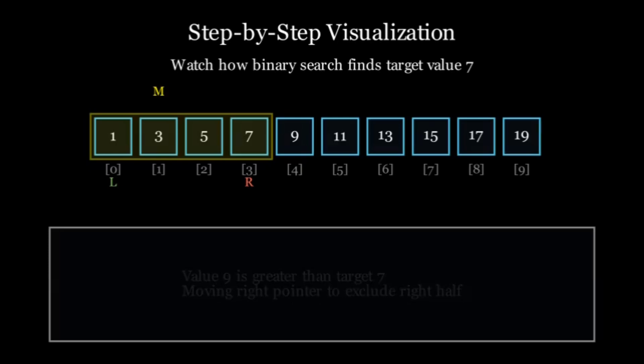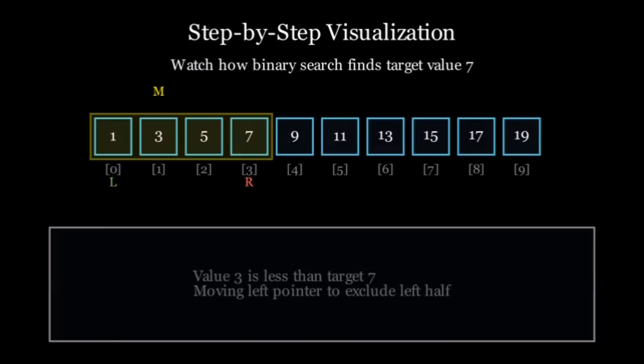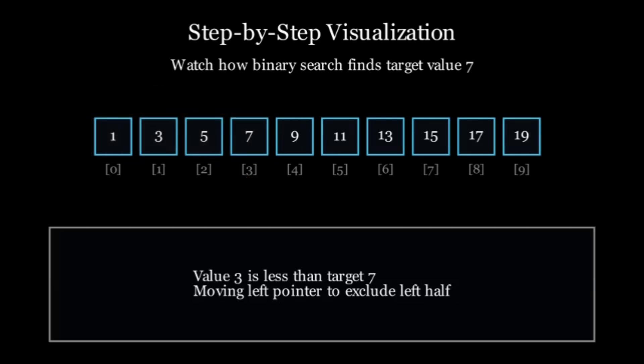Step 2. Now our search space is from index 0 to 3. Middle index is (0 + 3) // 2, that is 1. The value at index 1 is 3. Is 3 equal to 7? No. Is 3 less than 7? Yes. So we move the left pointer to mid + 1, that is 2.